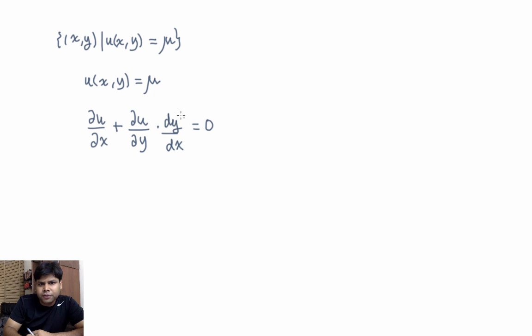Here, the slope of the indifference curve is this term dy/dx. ∂u/∂x is also known as marginal utility of commodity x. And ∂u/∂y is known as marginal utility of commodity y.